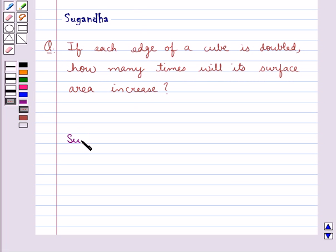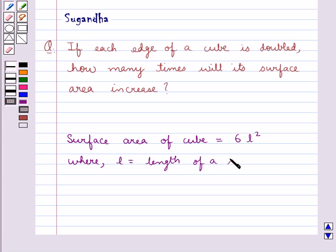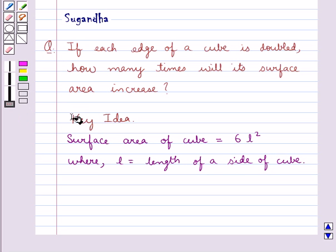Surface area of cube is equal to 6L square, where L is the length of a side of cube. This is the key idea for this question.